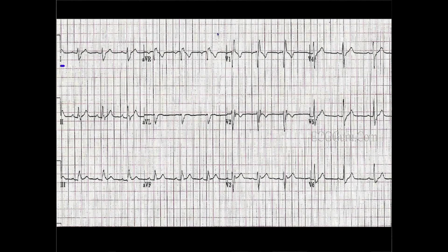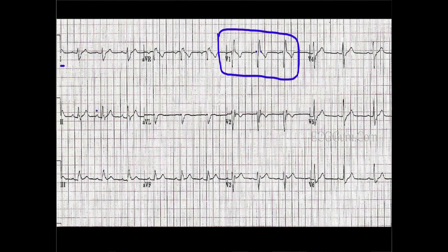Let's look at V1 first and check the criteria for right bundle branch block. The first criteria for any bundle branch block is that the QRS must be wide — in this case, the width comes from the addition of the right ventricular R prime wave. We do meet that criteria, so we move on. The next criteria is a supraventricular rhythm, meaning it comes from above the ventricles. This young man is in normal sinus rhythm — we have P waves — so that criteria is also met. Wide QRS and supraventricular rhythm: first two criteria satisfied.